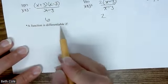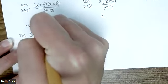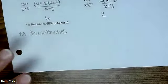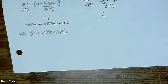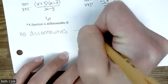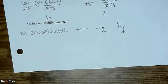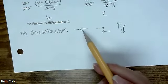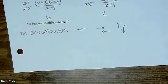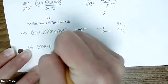Here are the rules. A function is differentiable if it is continuous — no discontinuities. It has to be continuous in order to be differentiable. Let's make pictures of all the discontinuities: a hole, a jump. You can also have the hole where the point is somewhere else. Those are all your discontinuities. And you can have no sharp edges.